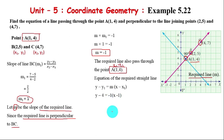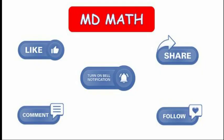Simplifying: y - 4 = -x + 1. Moving terms to one side: x + y - 5 = 0. This is the equation of the required line.